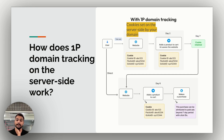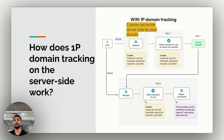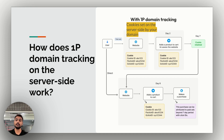Before explaining how server-side 1P domain tracking works, let me give you a quick overview of how traditional client-side cookie tracking works. In traditional client-side cookie settings, cookies are often set by third-party scripts or first-party scripts influenced by third-party domains. This causes ITP 2.3-based browsers and ad blockers to block these cookies. However, with server-side tracking with 1P domain tracking, the entire process is handled server-side.